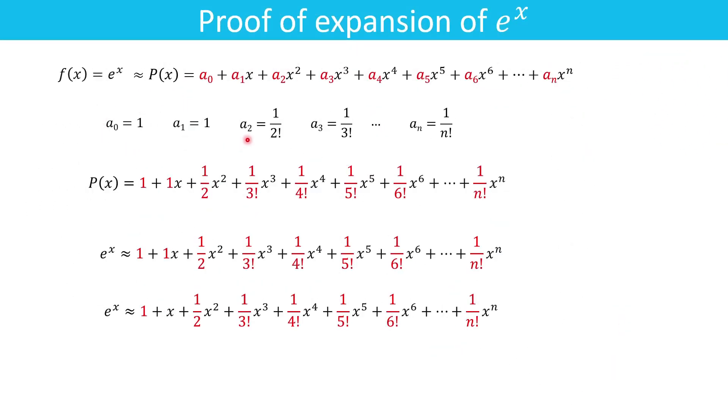And we get this whole expression. Since P(x) is the approximate value of e^x, hence we can equate these polynomials. We can equate these equations to get e^x = 1 + x + x²/2! + x³/3! and so on up to x^n/n!.